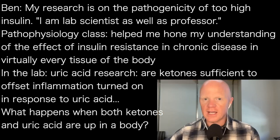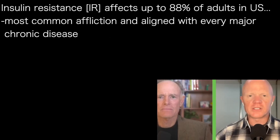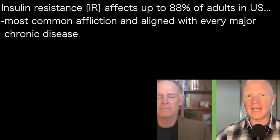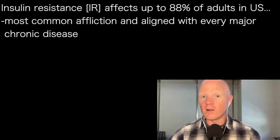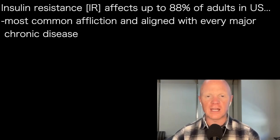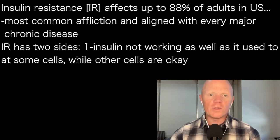What happens if uric acid levels are up but also ketone levels are up within a body? That's one of a handful of experimental designs and projects we have working on. Just so the audience appreciates why I would devote my career to this: insulin resistance affects up to 88% of all adults within the United States based on recent data. It is the most common health problem, and it also contributes to every non-communicable chronic disease — making it not only very prevalent, but also very relevant.